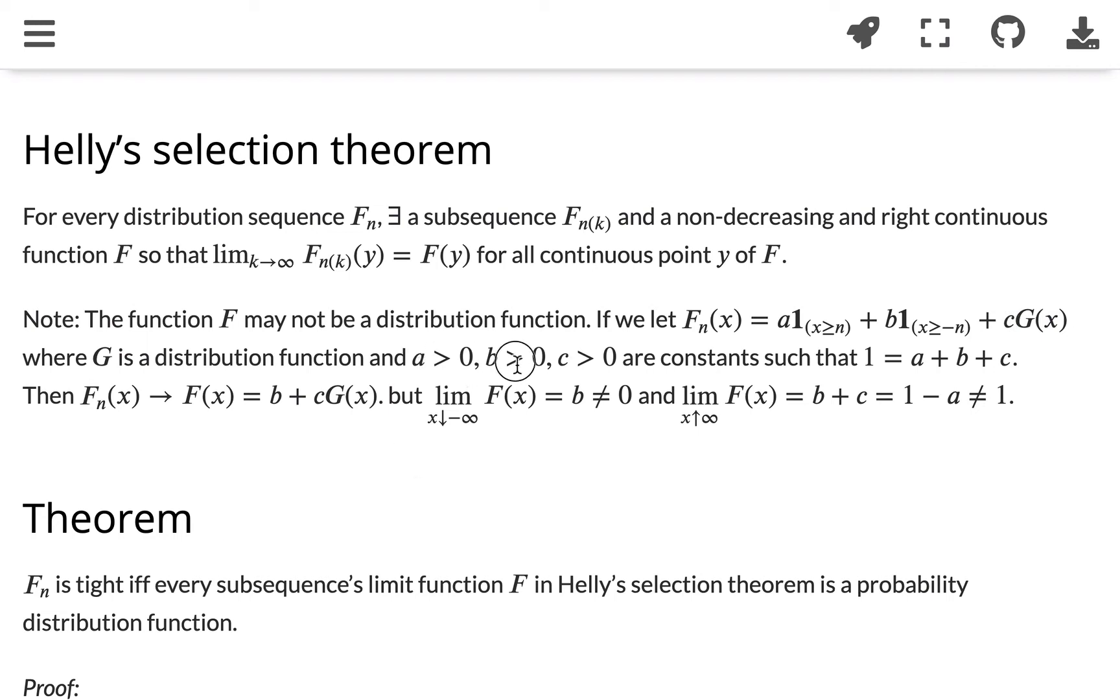Where a and b and c are greater than 0 and constant, with a constraint that a plus b plus c equals 1, then we can see that the function fn converts to f.